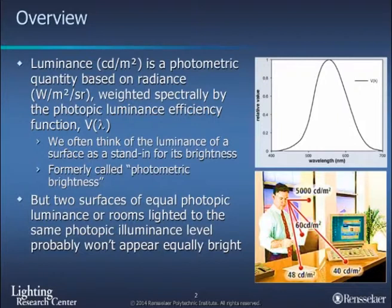What we'll go through today are many examples that two surfaces of equal luminance — photopic luminance — or rooms lit to the same photopic illuminance, don't or only rarely would appear equally bright. That's largely because of the assumption that the photopic luminous efficiency function represents how we see brightness.